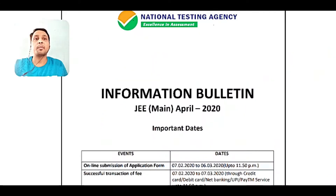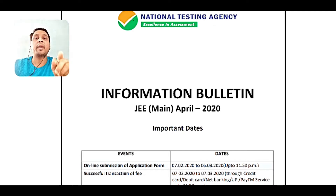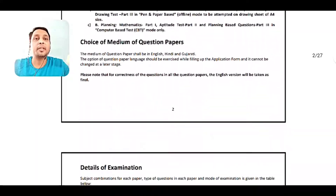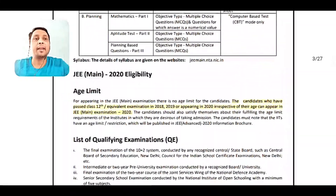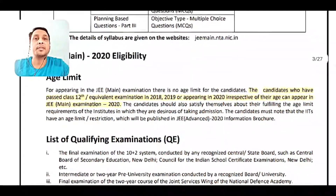This is the JEE Main 2020 information bulletin that you can see on screen. You can download it from the JEE Main website, or I will provide a link in the description. If you go directly to page number 3, you will see the highlighted portions that will be required for us.